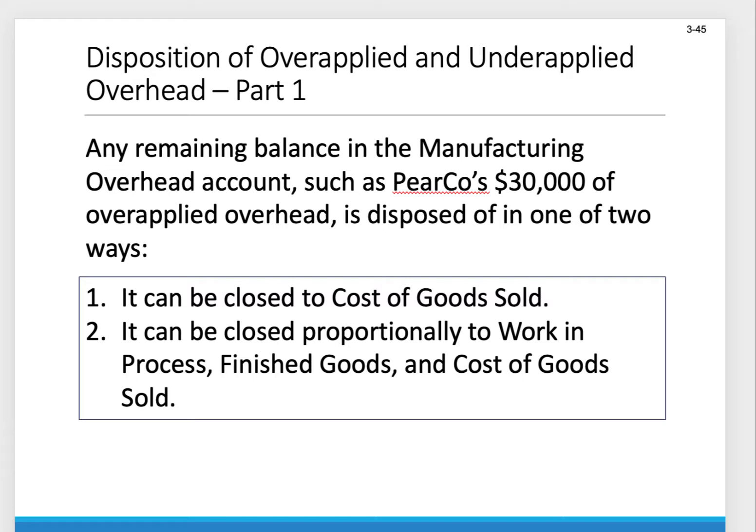There are two acceptable ways to fix this. We can close the whole thing out to cost of goods sold — that's the easiest way — or we can proportionally close it to our inventory accounts: work in process, finished goods, and cost of goods sold.